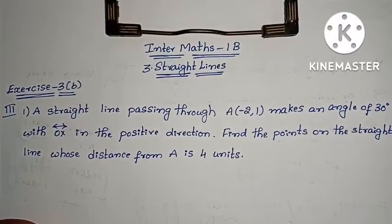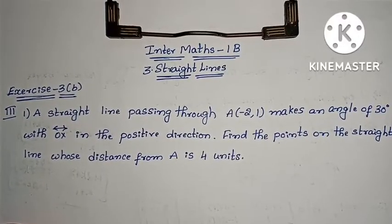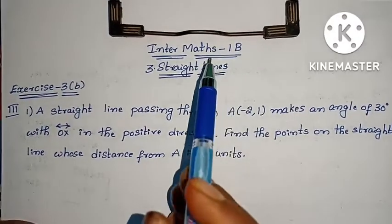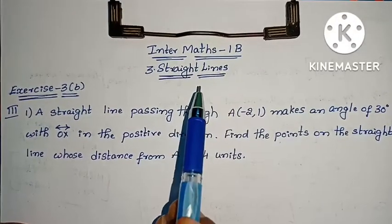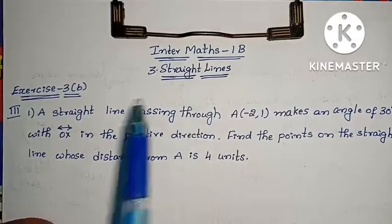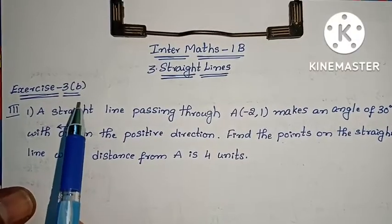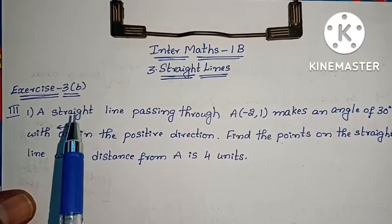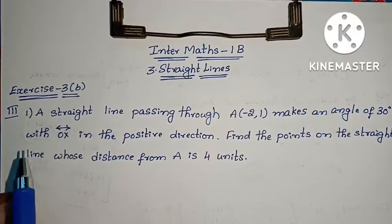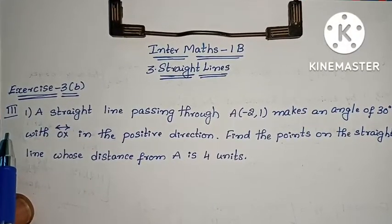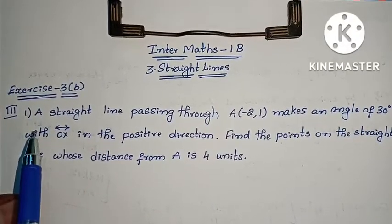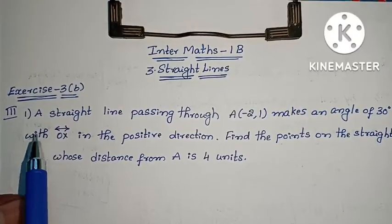Hi, welcome to Parnika Maths. This is Maths 1B, 3rd chapter of Straight Lines, Exercise 3B. This video covers the 3rd Roman numeral section, first problem.